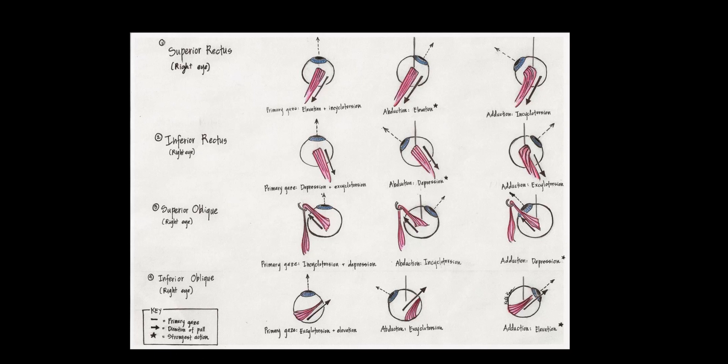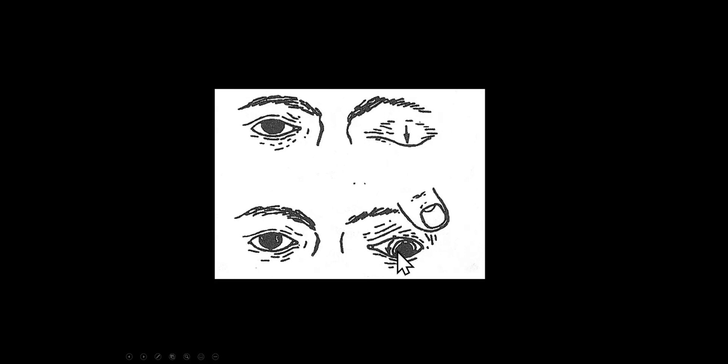We've previously seen pictures of what a fourth nerve palsy looks like. Coming back to a third nerve palsy — where we often have complete ptosis — if you lift the eyelid up, the eye is going to be in the down-and-out position. But if the fourth nerve is intact, when you ask the patient to try to look to the left, we're going to see incyclotorsion, and that tells us the fourth nerve is intact and the problem is just the third nerve palsy.